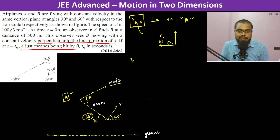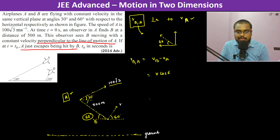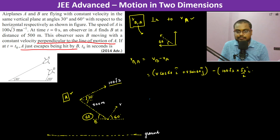So now we should write velocity of B with respect to A. This is going to be velocity of B minus velocity of A, which is V cos60° i-cap plus V sin60° j-cap minus velocity of A: 100 root 3 cos30° which is root 3 by 2 i-cap, plus 100 root 3 sin30° which is 1 by 2 j-cap.